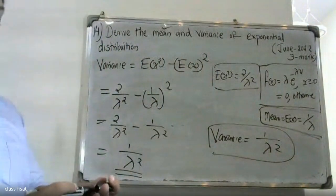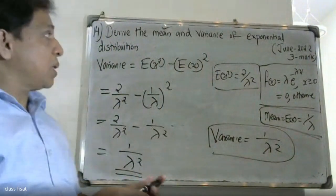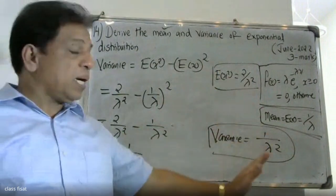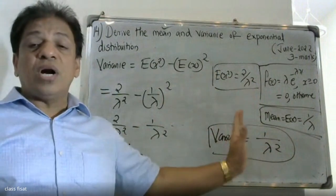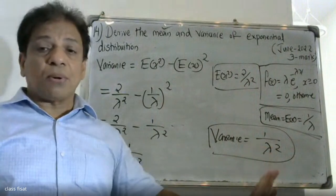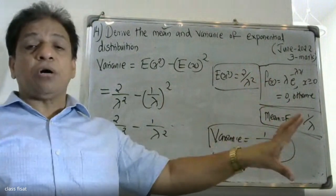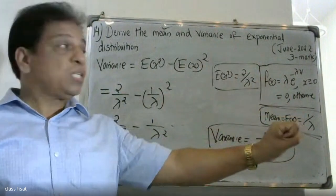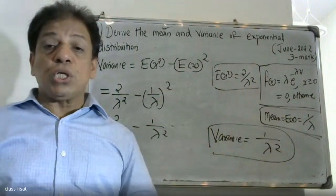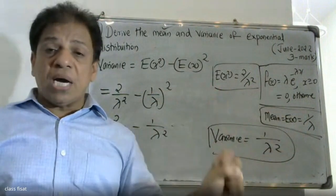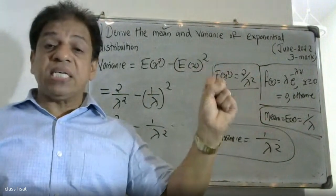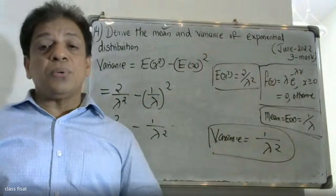In summary: for the exponential distribution with probability density function f of x equal to lambda into e raised to minus lambda x for x greater than or equal to 0, the mean is 1 by lambda and the variance is equal to 1 by lambda squared.